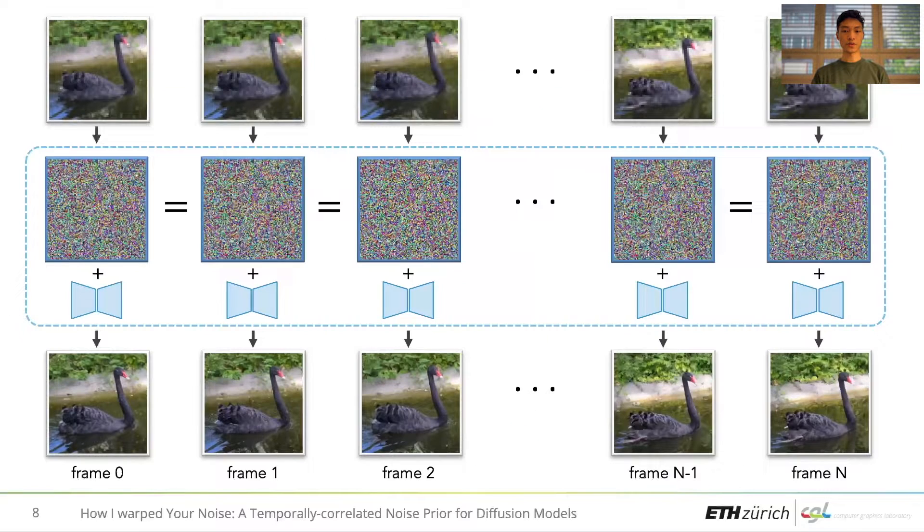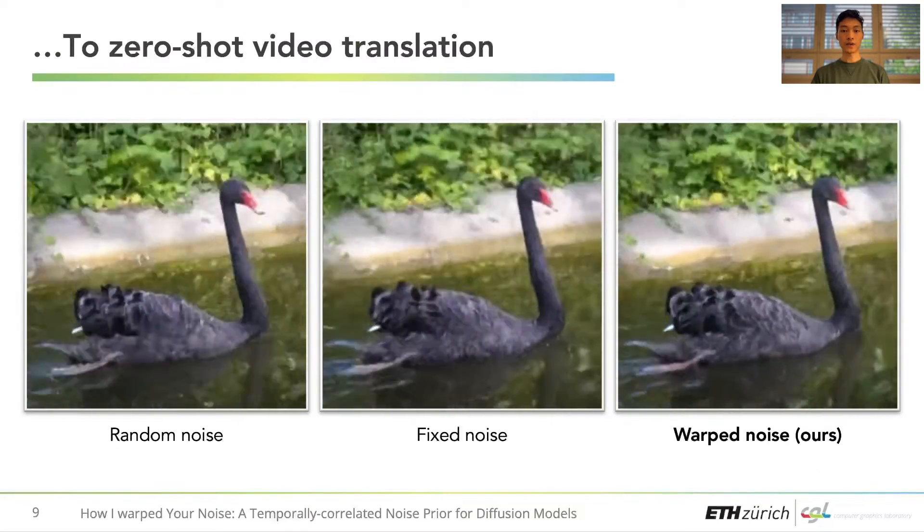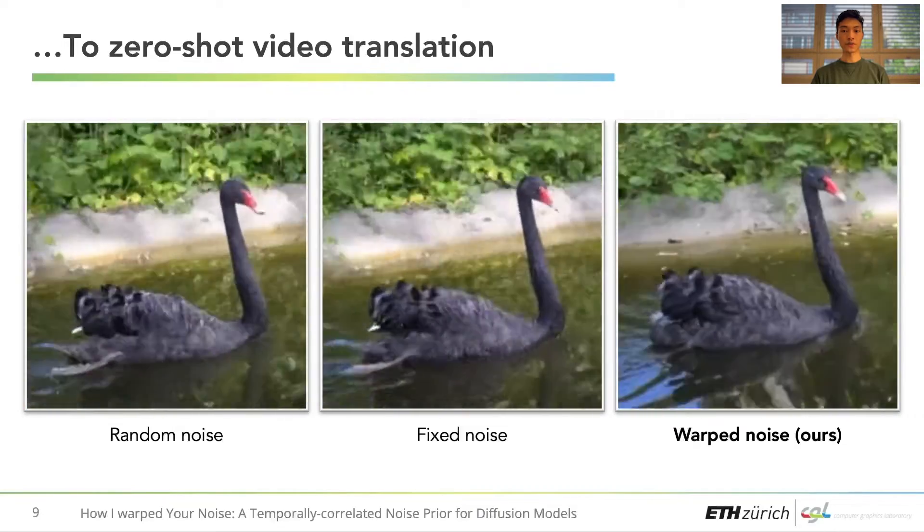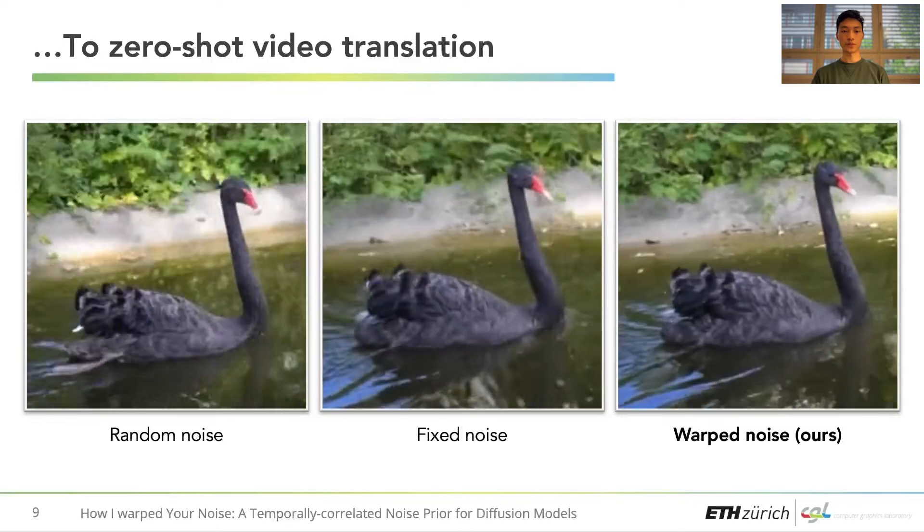By warping the added noise with the motion extracted from the video, we can create a noise sample that moves along with the content of the frames. Our method is able to accurately warp noise samples, augmenting diffusion models to produce temporally coherent results in a zero-shot manner.